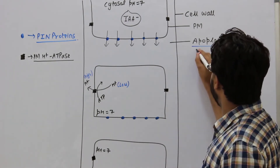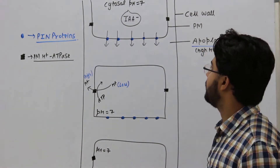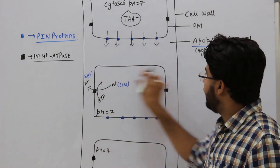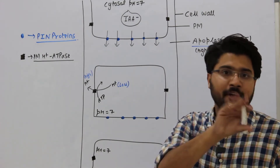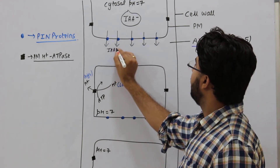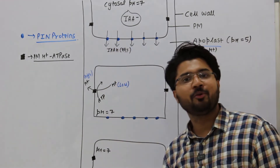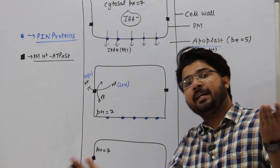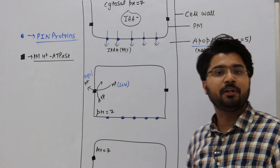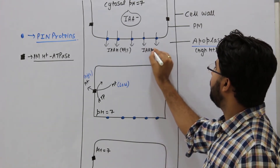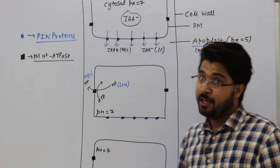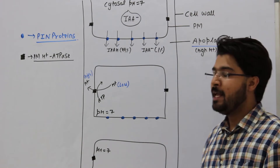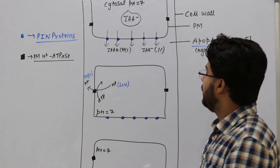When IAA⁻ comes out of a cell via PIN proteins, it enters the apoplast — which has very high H⁺ concentration. As a result, approximately 99% of IAA⁻ is protonated and converted into IAAH in the apoplast. The remaining ~1% stays as IAA⁻. Both IAAH and IAA⁻ need to enter the next cell to continue transport.